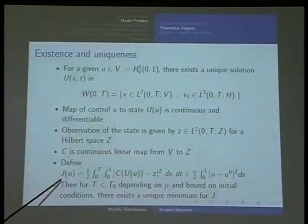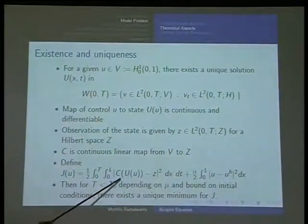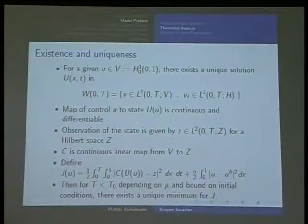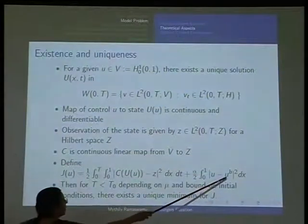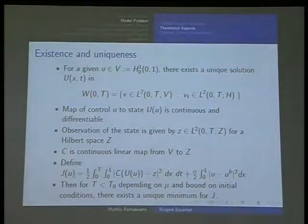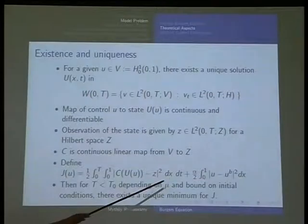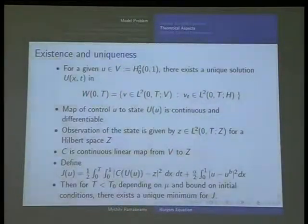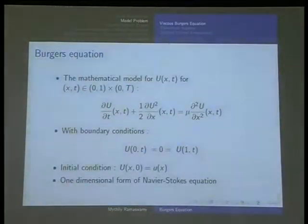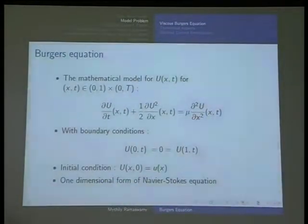Observation of the state is given by some z in another Hilbert space Z, because typically the observations may not be in the same space where your solution lives. We assume C is a continuous linear map. This is going to be our cost functional - the mismatch between the solution and the observations. You have a regularizing term, this u_b is a background term or rough estimate for your initial condition, which we assume is already known. Alpha is a parameter which we will see how best we can work with.